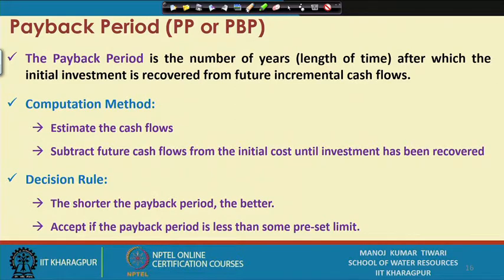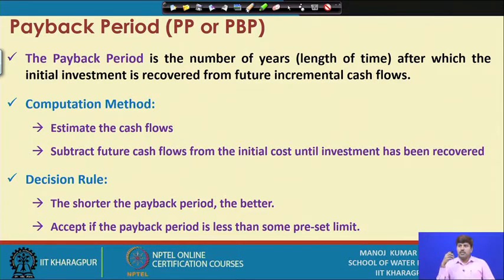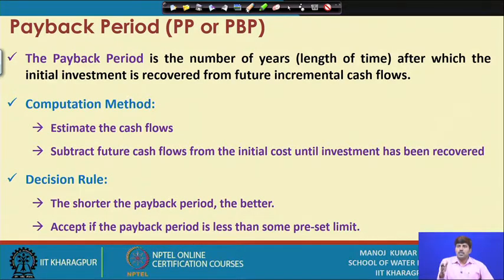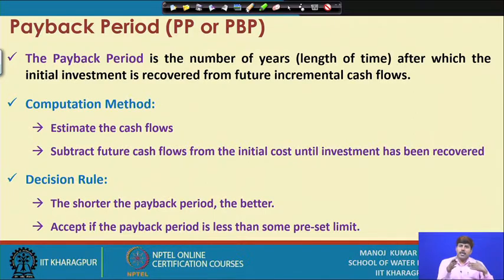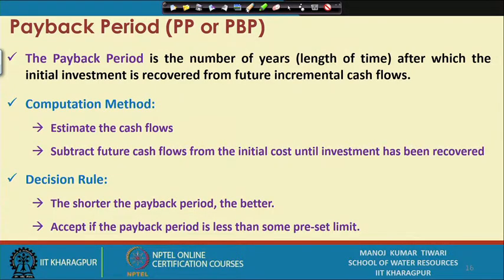For acceptance purposes, I can accept a proposal if the payback period is less than some preset limit. For example, if I decide I will invest in a project only if I recover my investment within 5 years, that becomes my preset limit. If I receive three proposals with payback periods of 3.5, 4.8, and 6 years, I will outright discard the one with 6 years because it exceeds my preset limit.